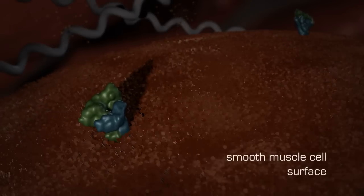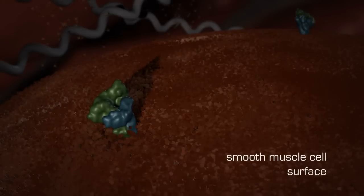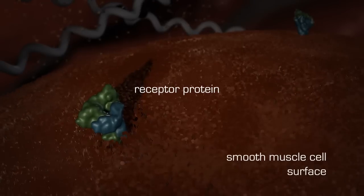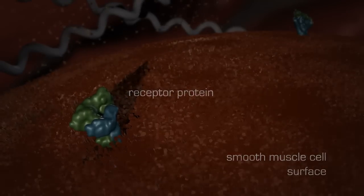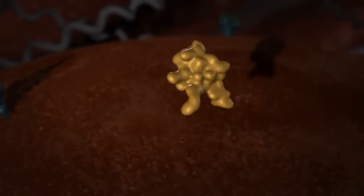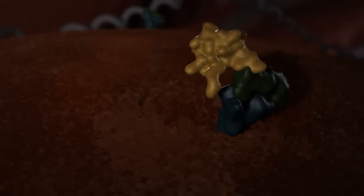The released growth factors and neoepitopes bind to various receptor proteins on the surface of the smooth muscle cells, triggering a cascade of responses leading to fibrosis.